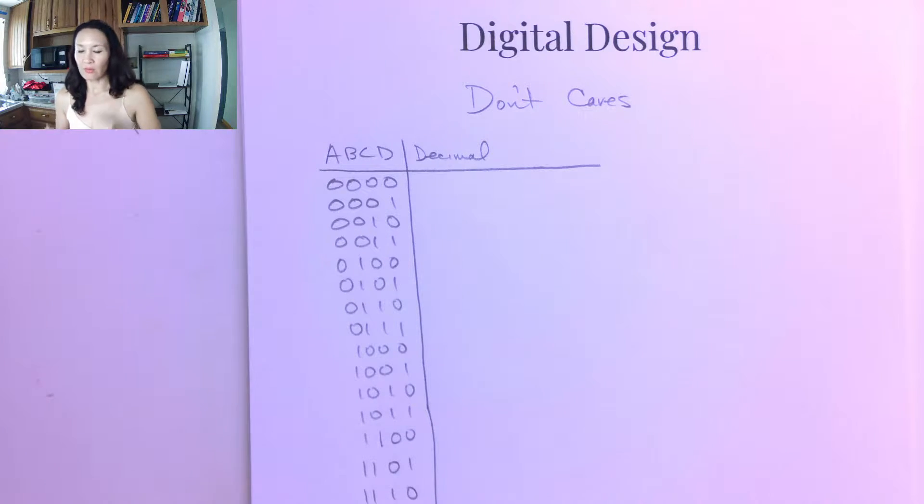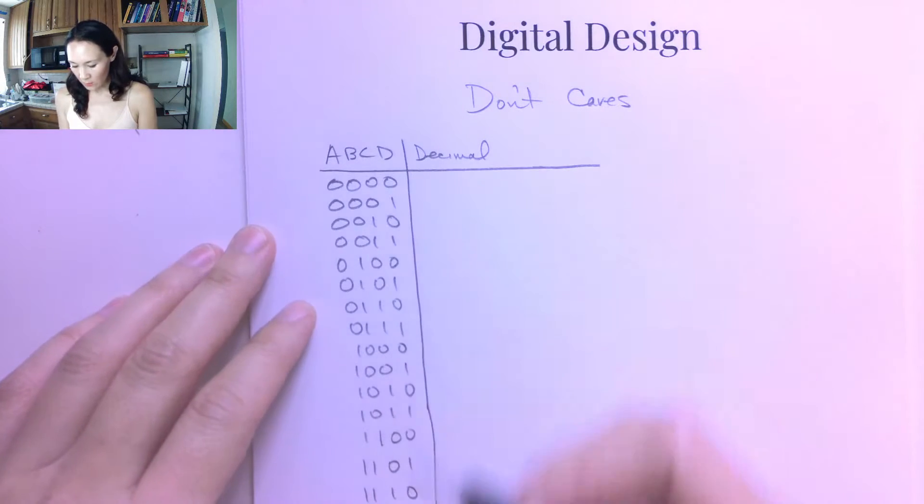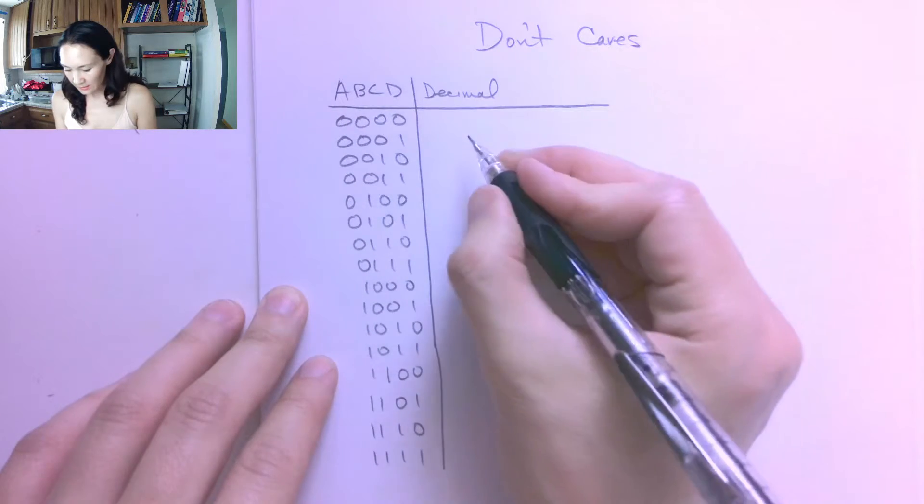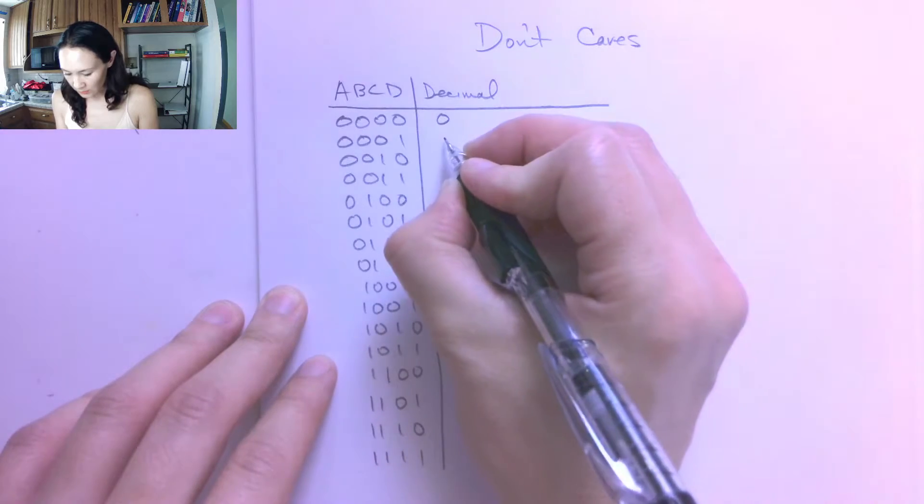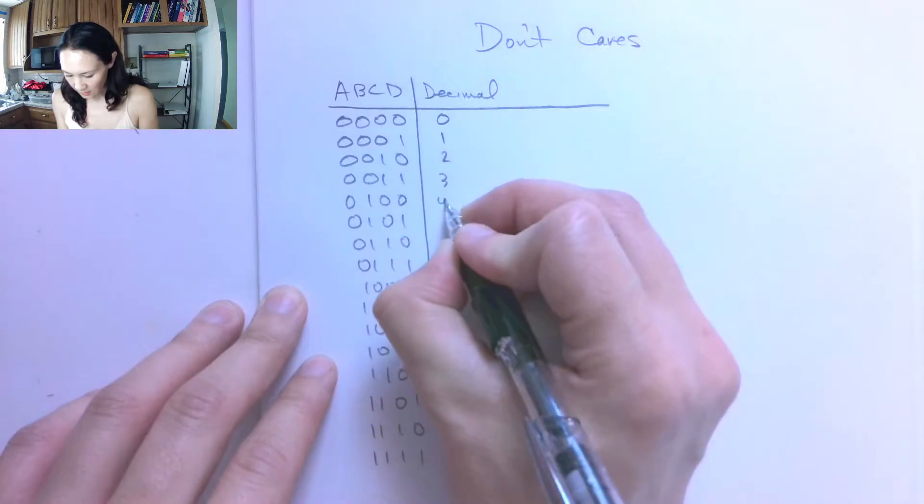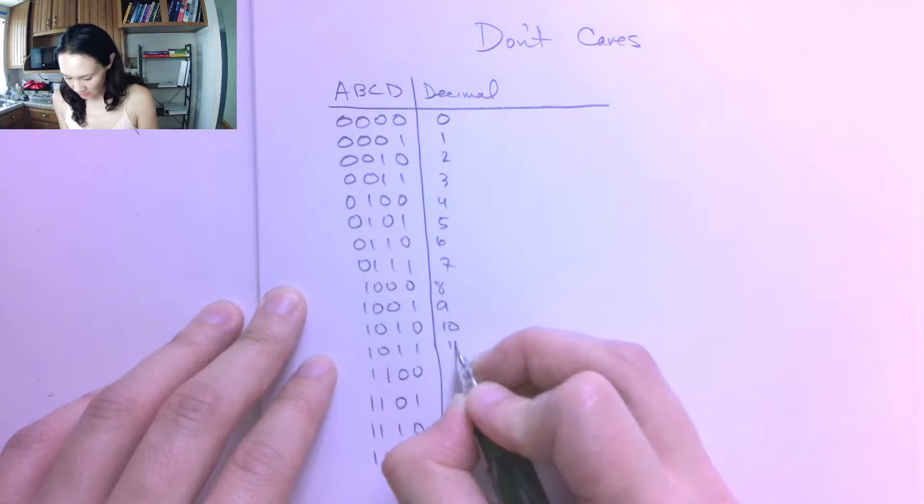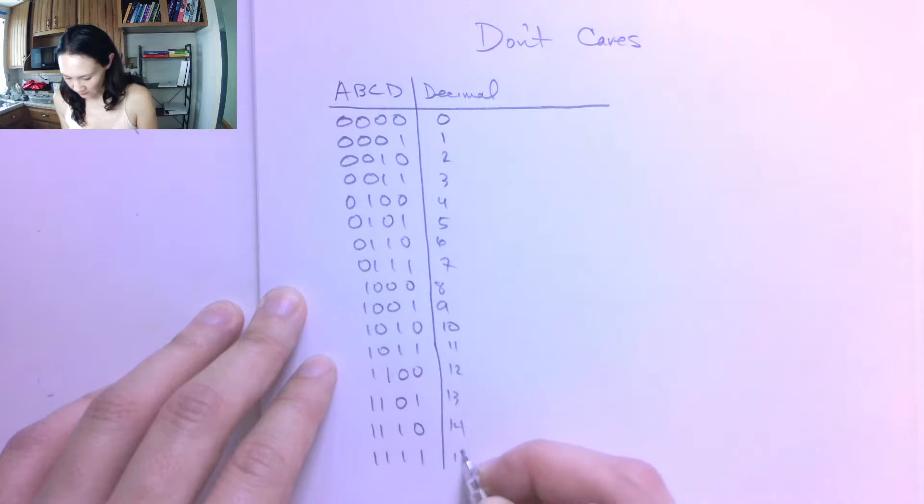So let me show you an example of what I mean by an unspecified output. I wrote out here all of the inputs of a 4-input system. So this corresponds to decimal 0, 1, 2, 3, 4, 5, 6, 7, 8, 9, 10, 11, 12, 13, 14, 15.